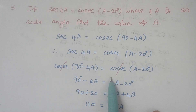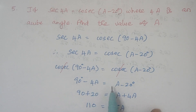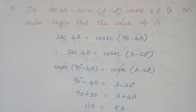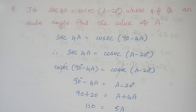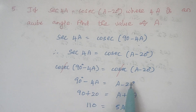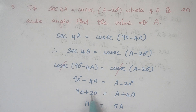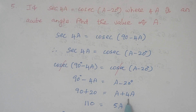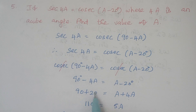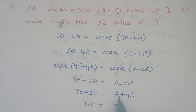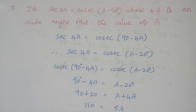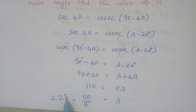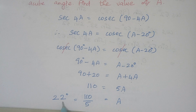The cosecants cancel each other and 90 minus 4A equals A minus 20. Combining similar terms: minus 20 moves to the left side becoming plus 20, and minus 4A moves to the right side becoming plus 4A. So 90 plus 20 equals 110, and A plus 4A equals 5A. Therefore the value of A is 110 divided by 5, which equals 22 degrees.